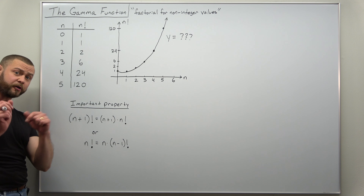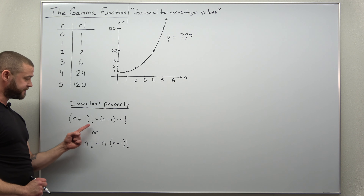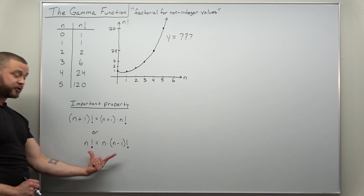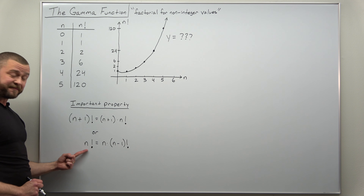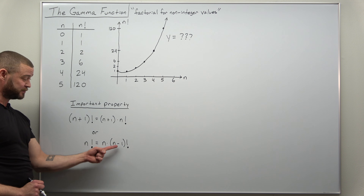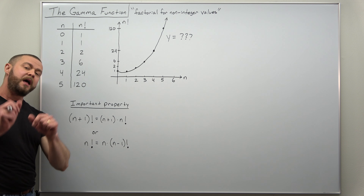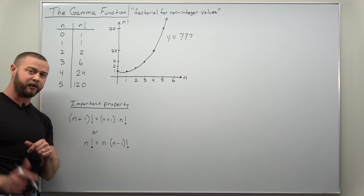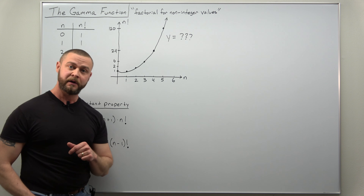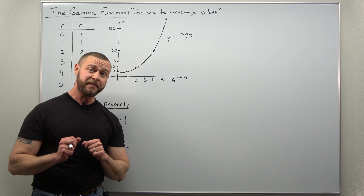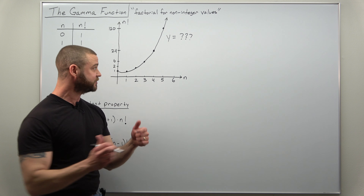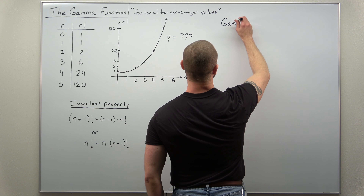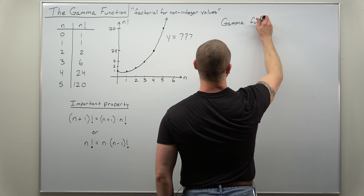We're going to generalize this basic property of factorials — the iterative property: n+1 factorial equals (n+1) times n factorial. You can rewrite that as n factorial equals n times (n-1) factorial. We're going to see if we can find a function that has this property built into it. So let's introduce the gamma function.